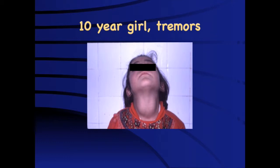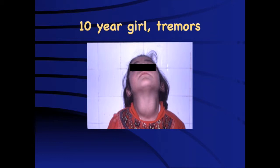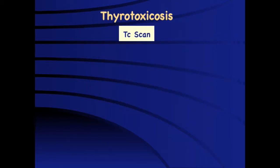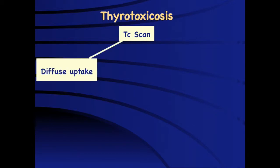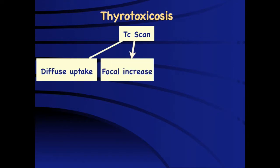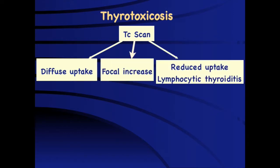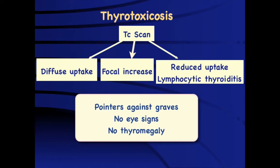In a 10-year-old girl presenting with a large goiter, an elevated FT4 and low TSH confirm the diagnosis of thyrotoxicosis. The most important next step is a thyroid scan. Diffuse increased uptake is suggestive of Graves disease, while reduced uptake favors lymphocytic thyroiditis.